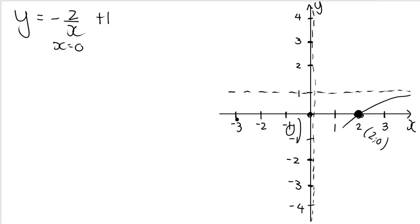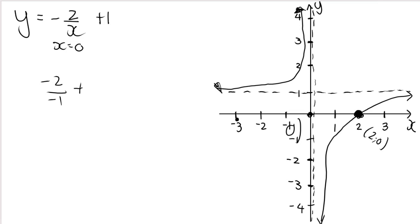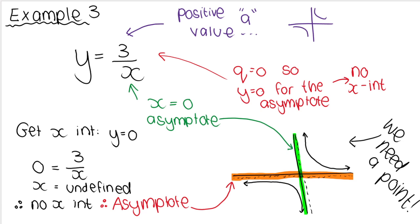To get a more accurate sketch, sub in another point. For x equals negative one: negative two divided by negative one plus one equals two plus one equals three, so (−1, 3) is another point to plot. The most important parts are labeling your intercepts and getting the shape correct in the correct quadrants. In example three, let's go through it together.